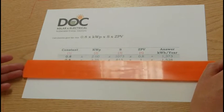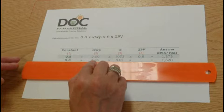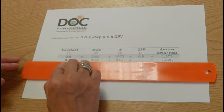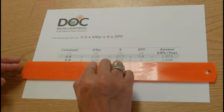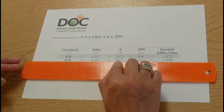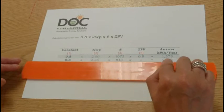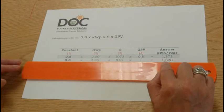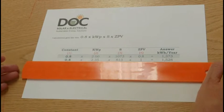If we look at the 10-panel system, which was the 2.35 kilowatts peak, we take 0.8 times 2.35, if that is placed in an east-west orientation, but with no overshading, we will get 1,528 kilowatt hours a year.